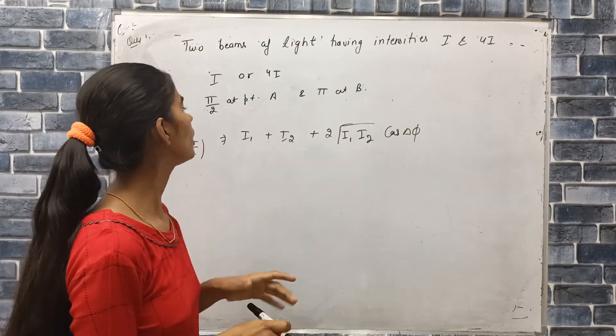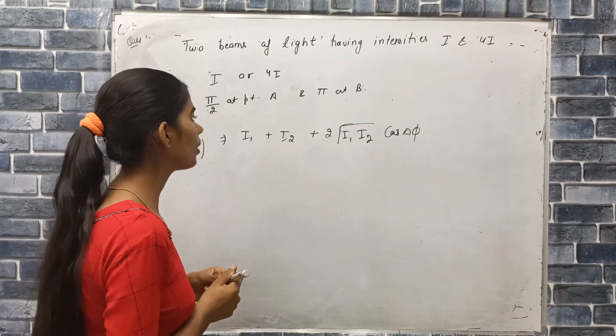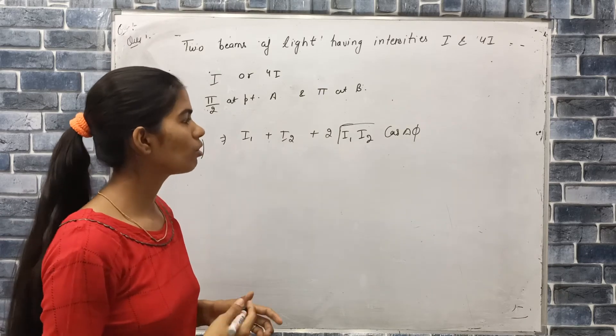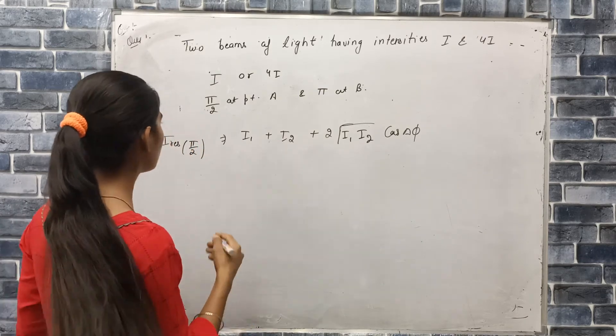Since we have two values, we will use this formula for both A and B. So this means 2 root I1 I2 cos delta where I1 is I and I2 is 4I.